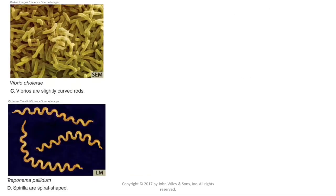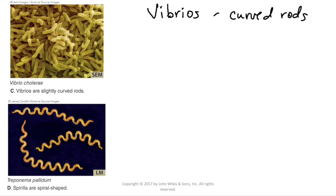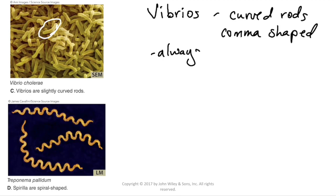There are also fun-shaped bacteria. We have the vibrios, generally described as curved rods — also sometimes referred to as comma-shaped. Here we have a picture of Vibrio cholerae, which causes cholera; you can see the nice curve to it. These are always single — we don't have anything like streptovibrio.